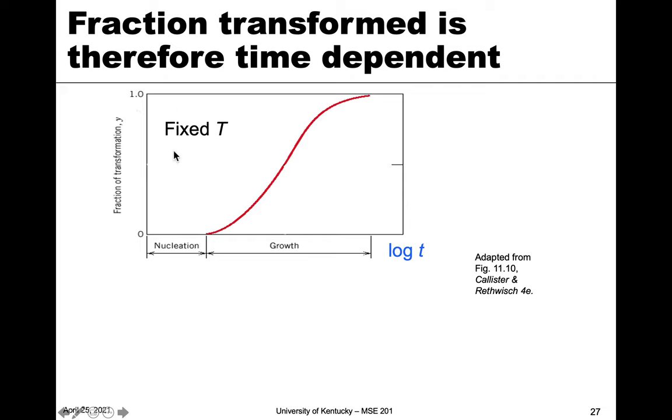This is all done at a fixed temperature, and what we see from this curve, which we think of as an S-shaped curve, is initially you really don't see anything happen because this is the nucleation step. You don't see any transformation until nucleation has occurred. Those small particles are so hard to see or detect that we just think of them as zero.